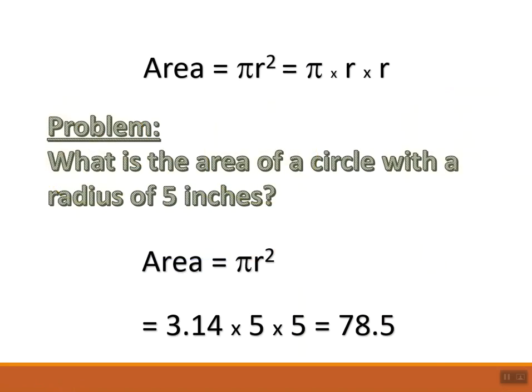So let's talk a little bit about a problem using the formula pi r squared. Here's the formula. Again, r squared is just simply r times r. So what's the area of the circle with a radius of five inches?